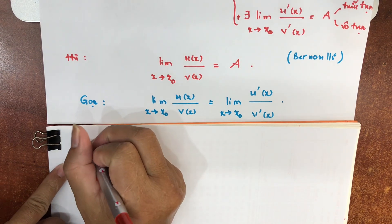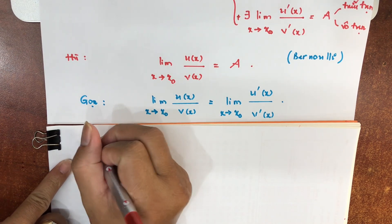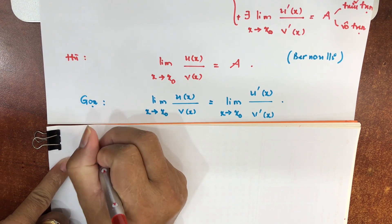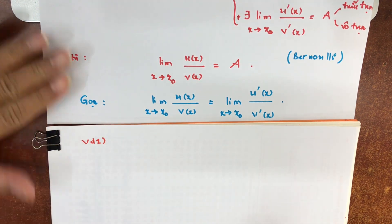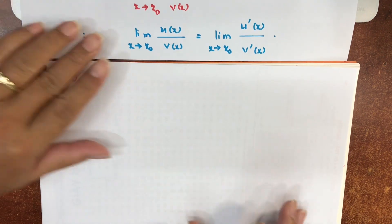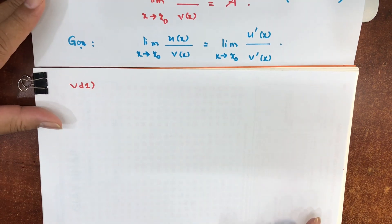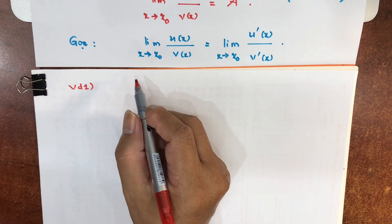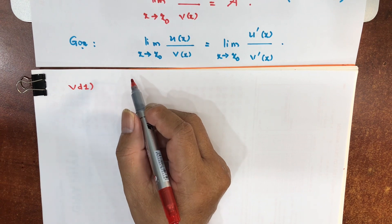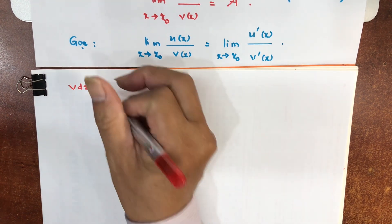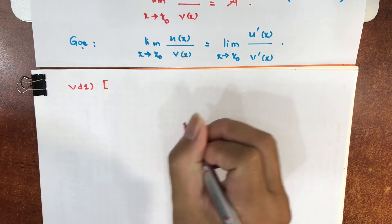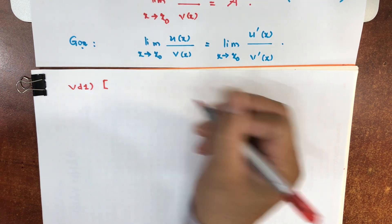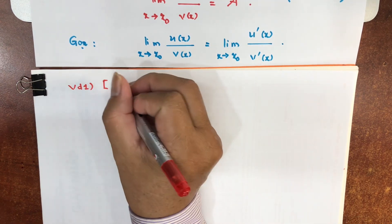Giờ chúng ta làm một số ví dụ áp dụng. Ví dụ 1: hầu như trong bài thi cuối kỳ thì chúng ta luôn luôn có ít nhất một câu áp dụng vấn đề này. Chúng ta xét một ví dụ ở đề thi của hệ đào tạo từ xa gần nhất.